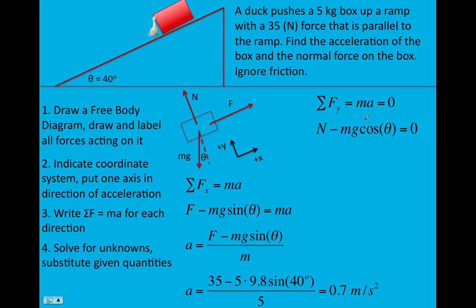And so in the x direction, we can solve for the acceleration. We know everything else. And so substituting in the force from the duck, and the mass, and the angle, and the mass again, we get 0.7 meters per second per second.